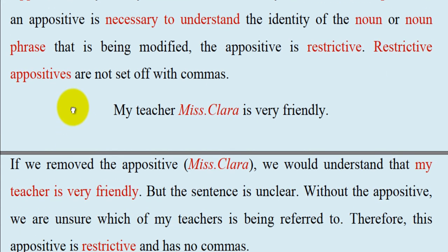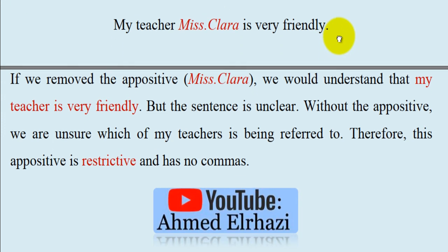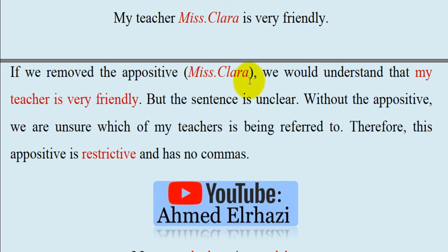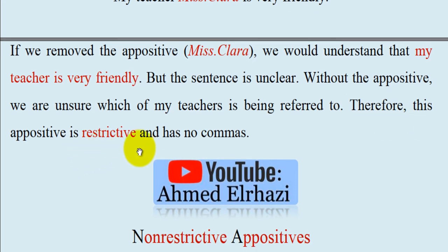Restrictive appositives are not set off with commas. Example: 'My teacher Miss Clara is very friendly' — no comma. If we removed 'Miss Clara,' the sentence becomes unclear: we would not know which of my teachers is being referred to — French, English, etc. Therefore, this appositive is restrictive and has no commas.